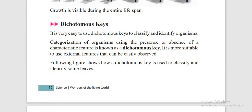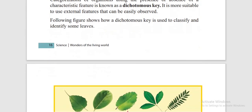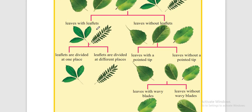The dichotomous key is used to divide or categorize organisms using the presence or absence of a characteristic. Here you can see a dichotomous key for plants: leaves with leaflets or without leaflets; leaflets divided at one place or at different places; leaves with a pointed tip or without; leaves with wavy blades or without. We keep dividing until we get to one organism.